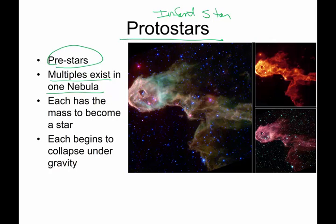Multiples can exist in one nebula, so one nebula is the birthplace of one cluster of stars. Each one of these proto-stars — each one of these little globs or conglomerates here — has enough mass to actually produce stars. I love this picture because it's pretty obvious to see some of these clumps in multiple different wavelengths that are going to end up producing some pretty massive stars.